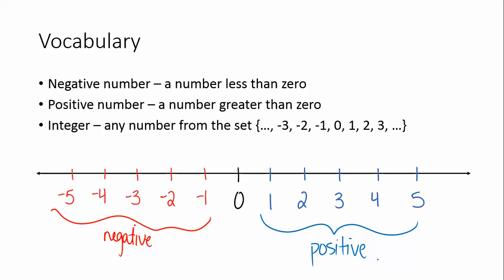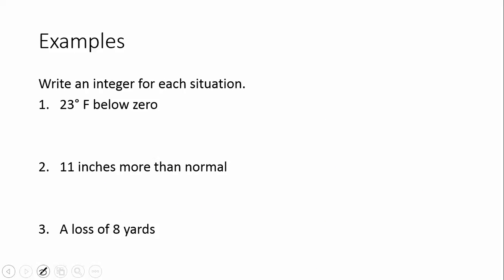I also want to point out that the number zero is neither positive or negative. So let's look at some examples where you are to write an integer for each situation. Please be writing the problems down in addition to the answers. Number 1: 23 degrees Fahrenheit below zero. If something is below zero, it's going to be negative, and it's 23. So we would say negative 23.